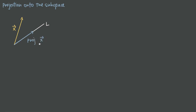We also know that we have this important piece here, which is the vector that's orthogonal to the projection. It's at a 90 degree angle to the projection and it connects the projection vector to the original vector. And really, we know that that is just the vector x minus the projection of x onto L.